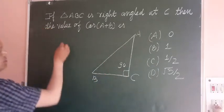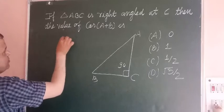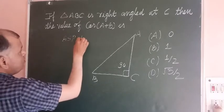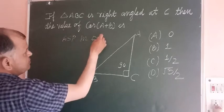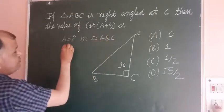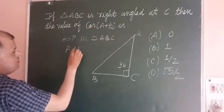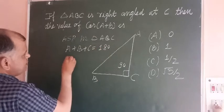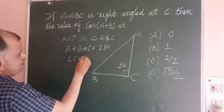So you know that by ASP angle sum property in triangle ABC we have A plus B plus C, sum of all three angles is 180, and here it is given that angle C is 90 degrees.